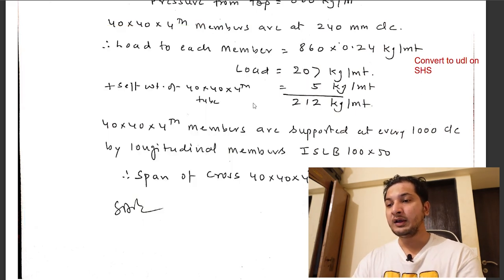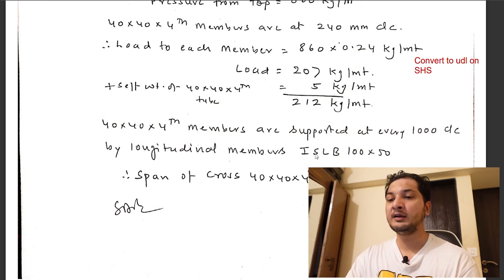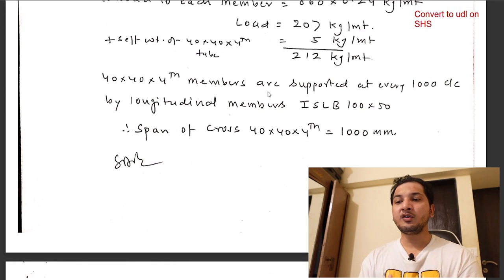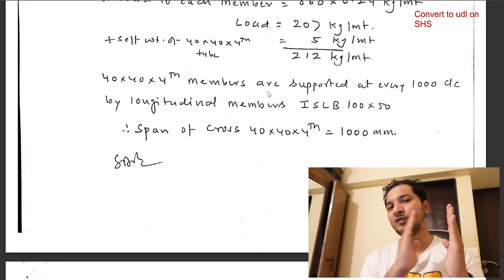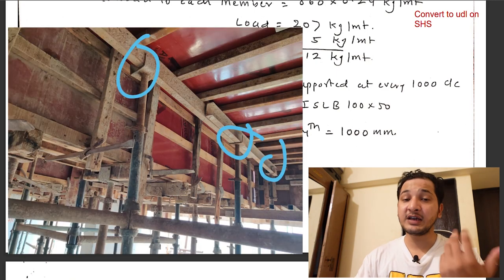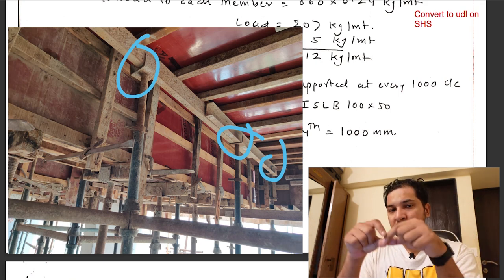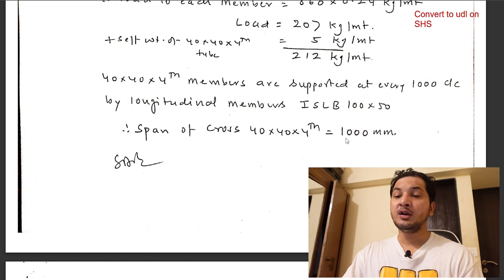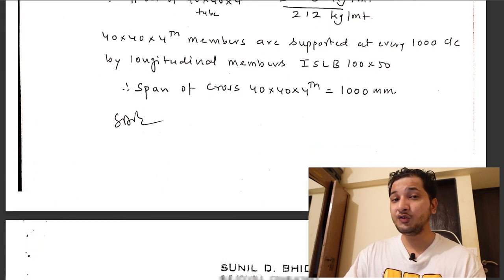The square tubes are supported on primary members. In this shuttering design the primary members are taken as ISLB 150 — some people use ISMC 100 or ISMB 75/100 depending on design and site conditions. The span of the cross members is 1 meter because we have assumed the shuttering grid to be 1 m × 1.2 m and the cup lock verticals are placed at that spacing. The channels also span 1 meter, and the square tubes resting on the ISLB also span 1 meter. Total load on the square tube is 212 kg/m.